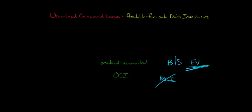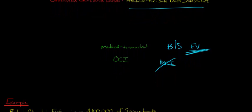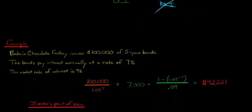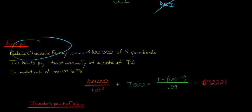No realized gains or losses will hit the income statement unless we actually sell the available-for-sale debt investments. Let me walk you through an example. Say we have Babu's Chocolate Factory. They issued these bonds and the issue price was $92,221.